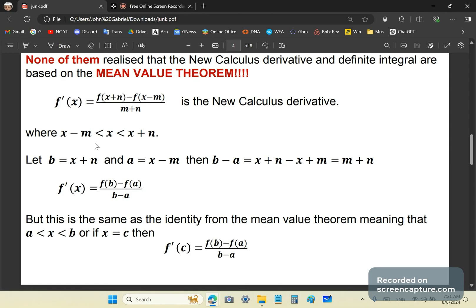x lies between x minus m and x plus n. That's your first clue, OK? Because c lies between b and a. And so if you let b equal to x plus n and a equal to x minus m, then b minus a is equal to m plus n. And you have this identity here. Does this ring a bell? Of course it does.